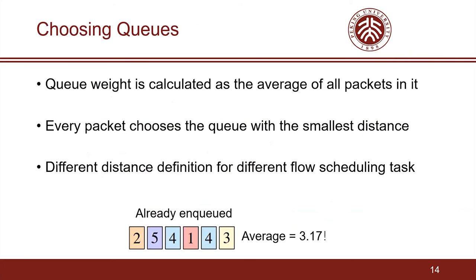Next, we describe how an incoming packet chooses its queue. The queue weight is calculated as the average of the weights of all packets buffered in the queue. As shown in the figure, the queue has a weight of 3.17. According to the classical clustering ideology, every packet chooses the queue with the smallest distance, and we have different definitions of distance for different flow scheduling tasks.